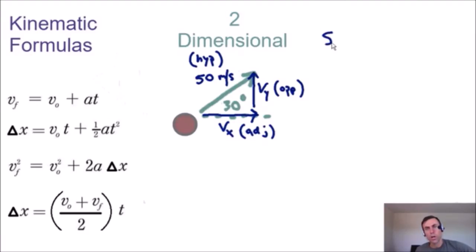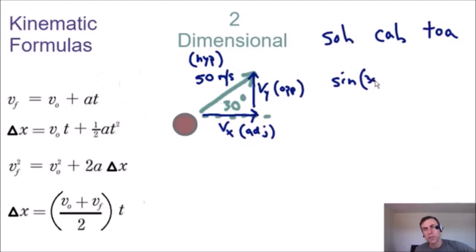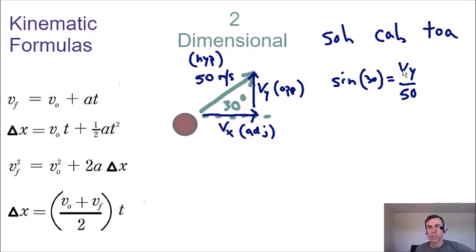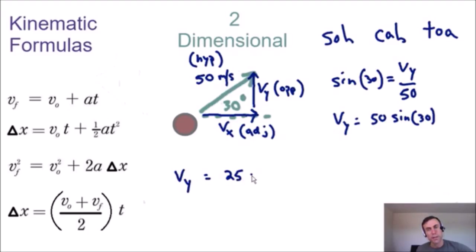Now we use SOH-CAH-TOA. Sine equals opposite over hypotenuse, cosine equals adjacent over hypotenuse. Using sine: sin(30°) = v_y / 50, so v_y = 50 × sin(30°). Since sin(30°) = 1/2, the vertical velocity v_y equals 50 × 1/2, which is 25 meters per second.